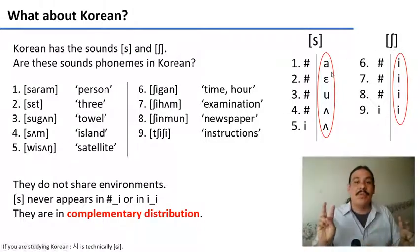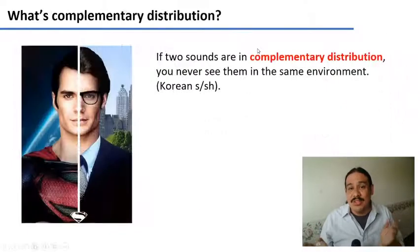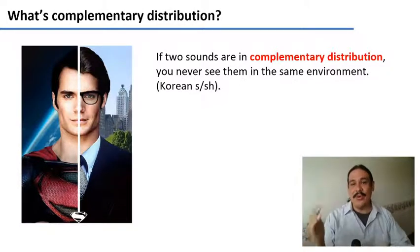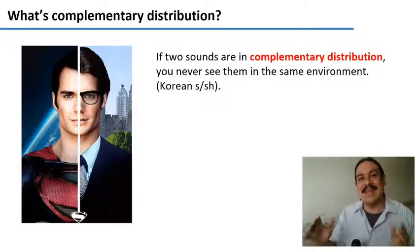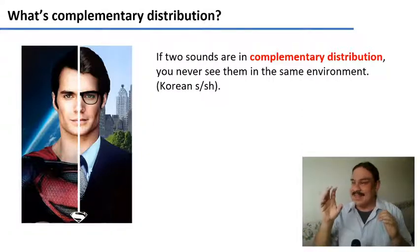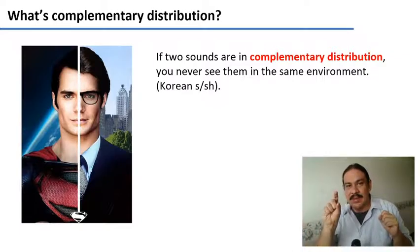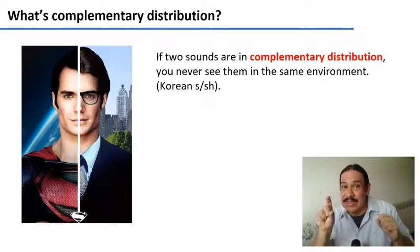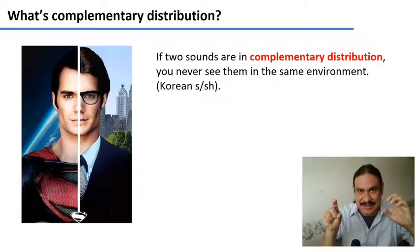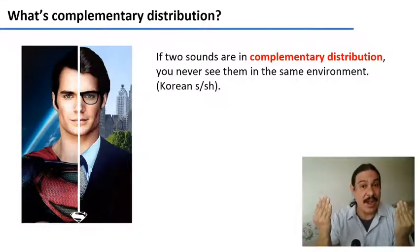We call this configuration complementary distribution, because when you see one sound, you don't see the other. Like Clark Kent and Superman — you know they're the same person because you never see them in the same room at the same time. So in Korean, whenever you have an environment like being followed by E, you will only find /ʃ/; you will never find /s/. These two sounds are in complementary distribution because they occur in different environments.